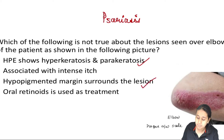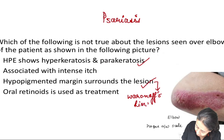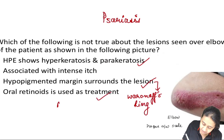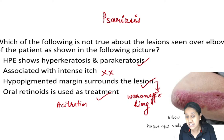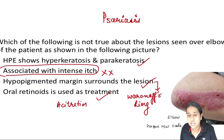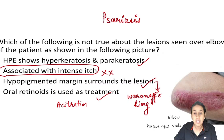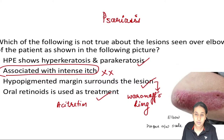The histopathology shows hyperkeratosis and parakeratosis - this is true. The hypopigmented margin surrounding a psoriasis lesion is Woronoff's ring. An oral retinoid, acitretin, is used in patients of psoriasis. But remember, you will never have intense itching in a patient of psoriasis. So the incorrect answer is option number 3: associated with intense itch.